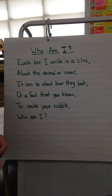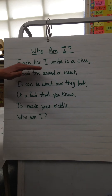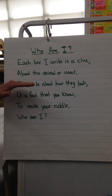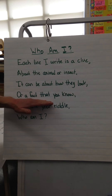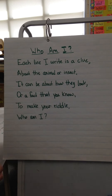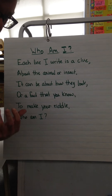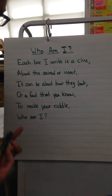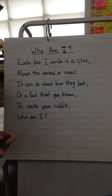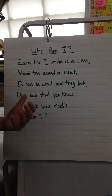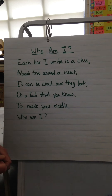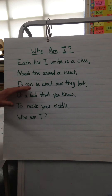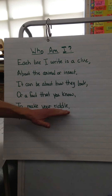Then think about some of the characteristics of that animal. Each line I write is a clue about the animal or insect. It can be about how they look or a fact that you know. You can talk about how your animal or insect appears, what they look like. You can talk about their habitat, where they live, or any other facts you might know about your animal or insect — what they eat, that sort of thing. Give those clues on each line to make your riddle.